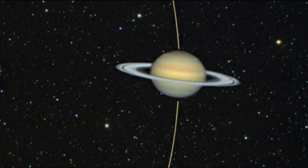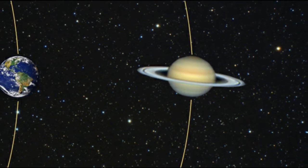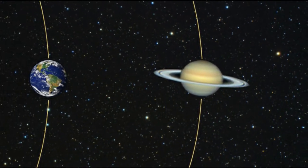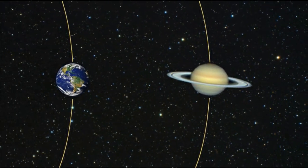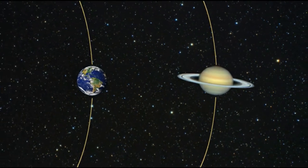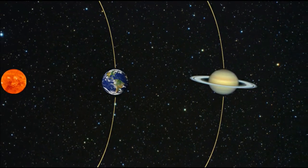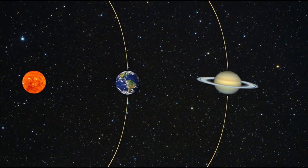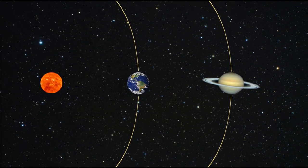El 3 de abril estará en oposición. Esto significa que nuestro planeta se coloca entre el Sol y Saturno, por lo que éste se situará en el punto de máximo acercamiento a la Tierra. Será pues el mejor momento para ver al planeta y sus anillos.